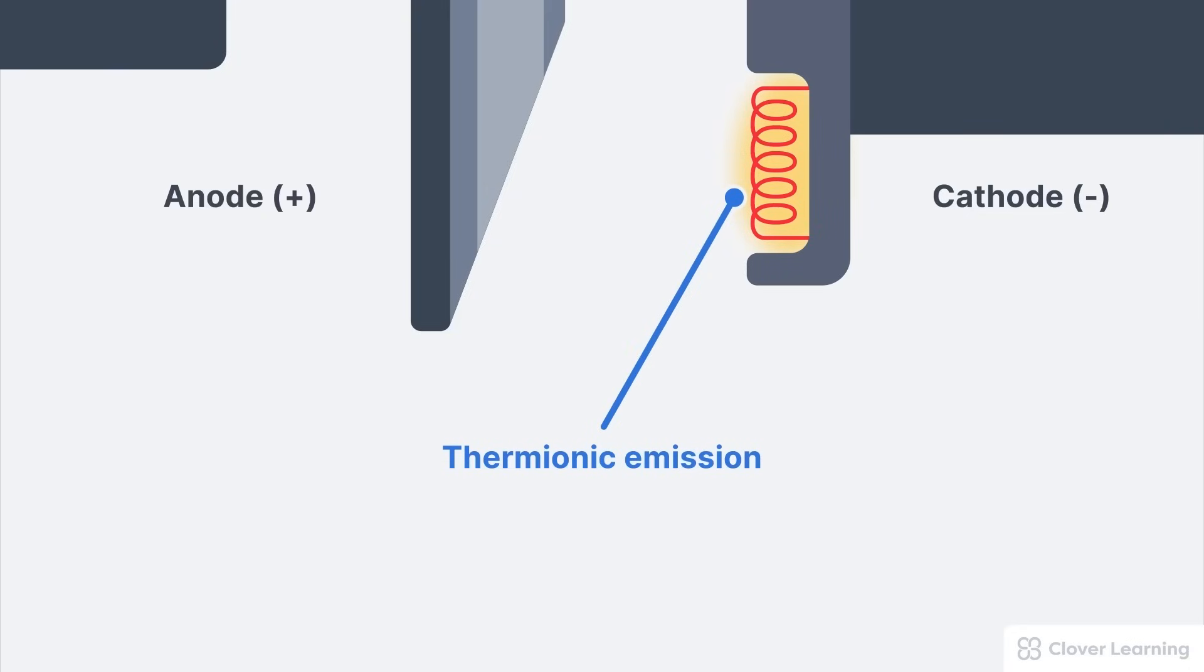This is kind of like the filament in an incandescent light bulb. A current running through the light filament creates heat which creates light. In an X-ray tube, the filament gets so hot it creates free electrons.